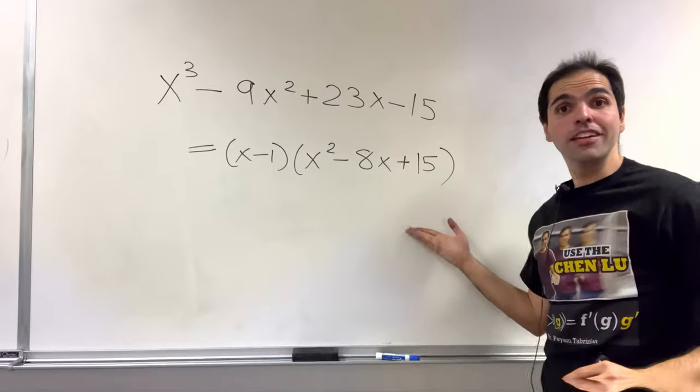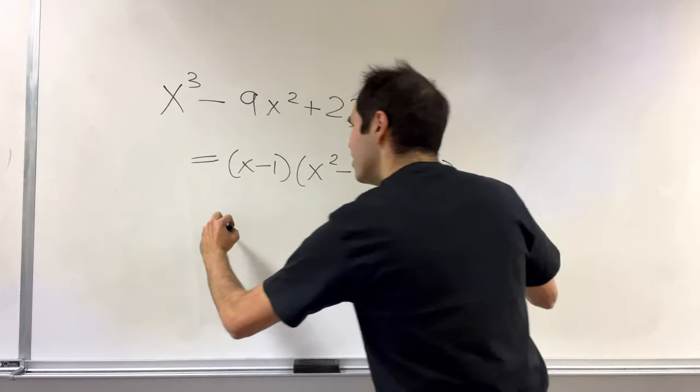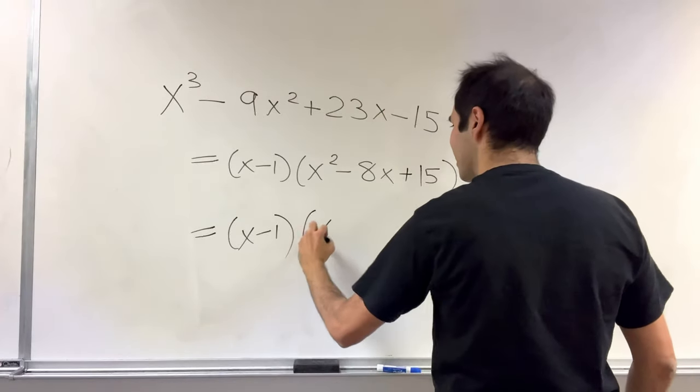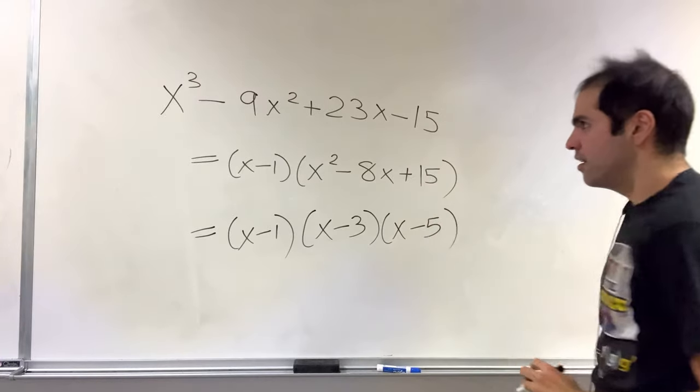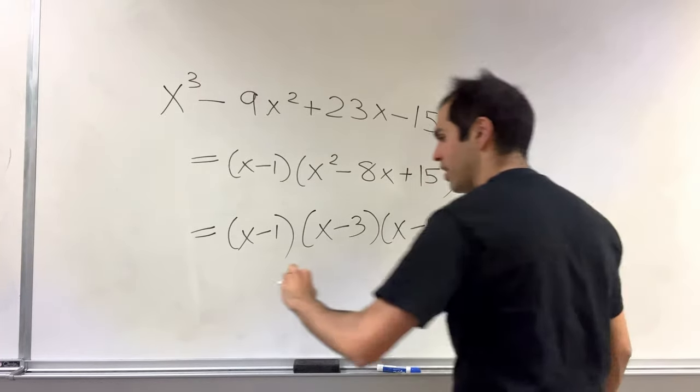And the good news is, using quadratic formula if you want, you can decompose this even further. You get x minus 1 times x minus 3 times x minus 5, meaning that the roots of this polynomial are 1, 3, and 5.